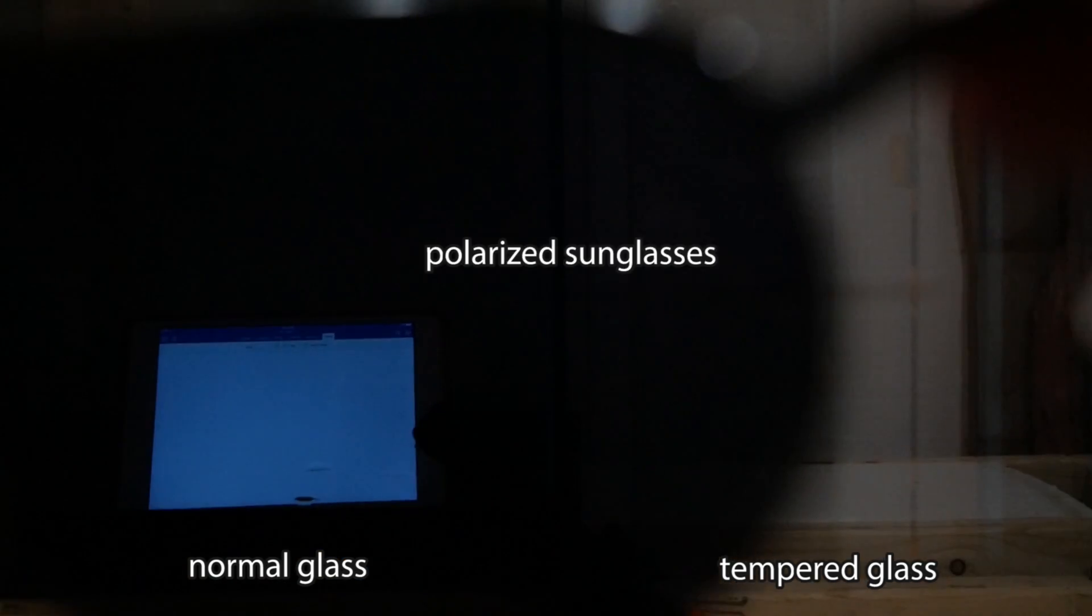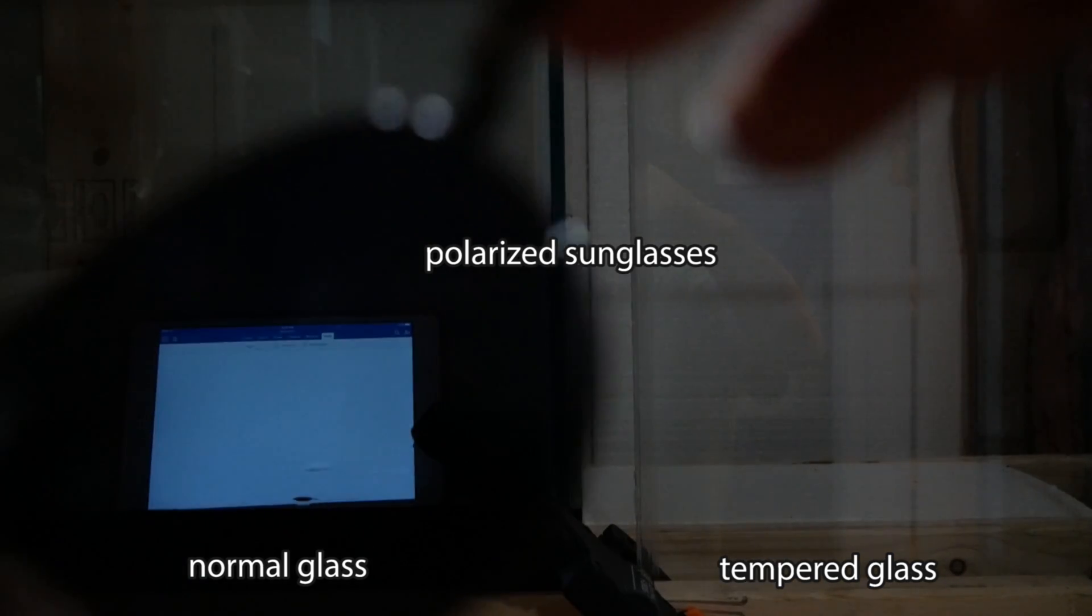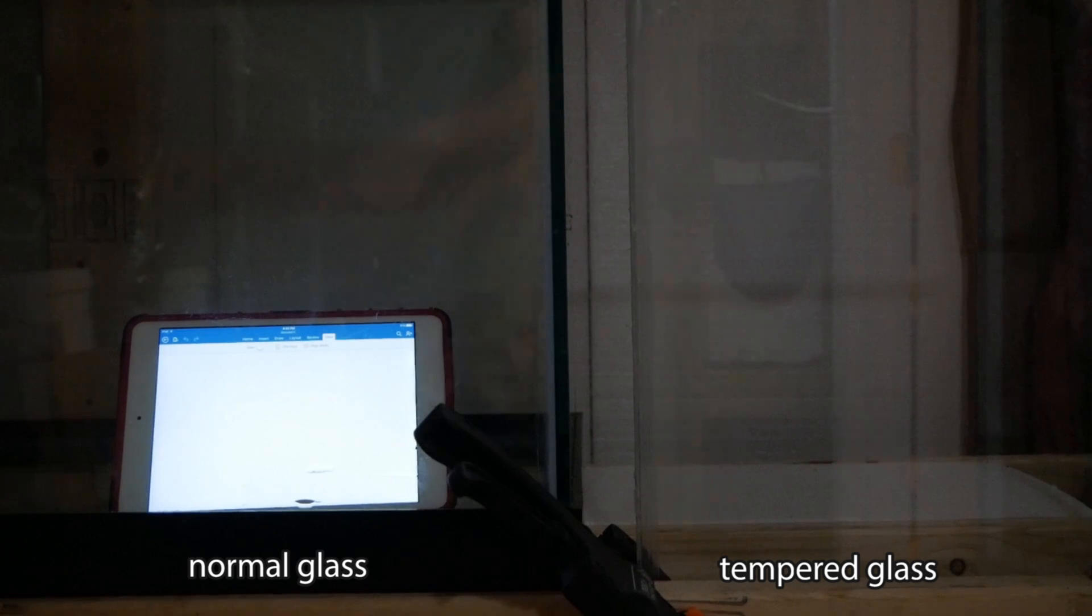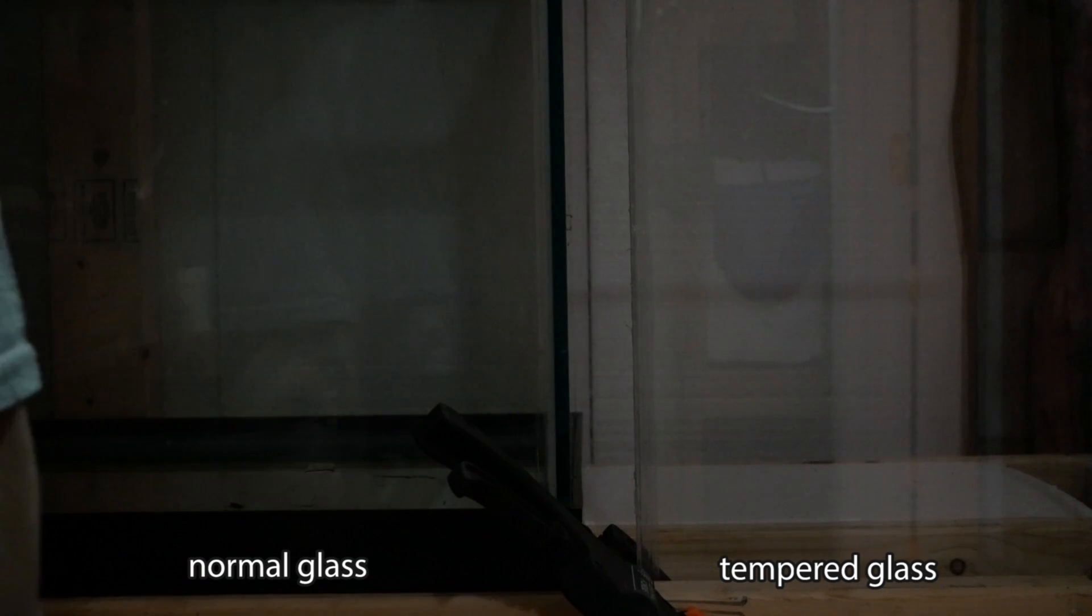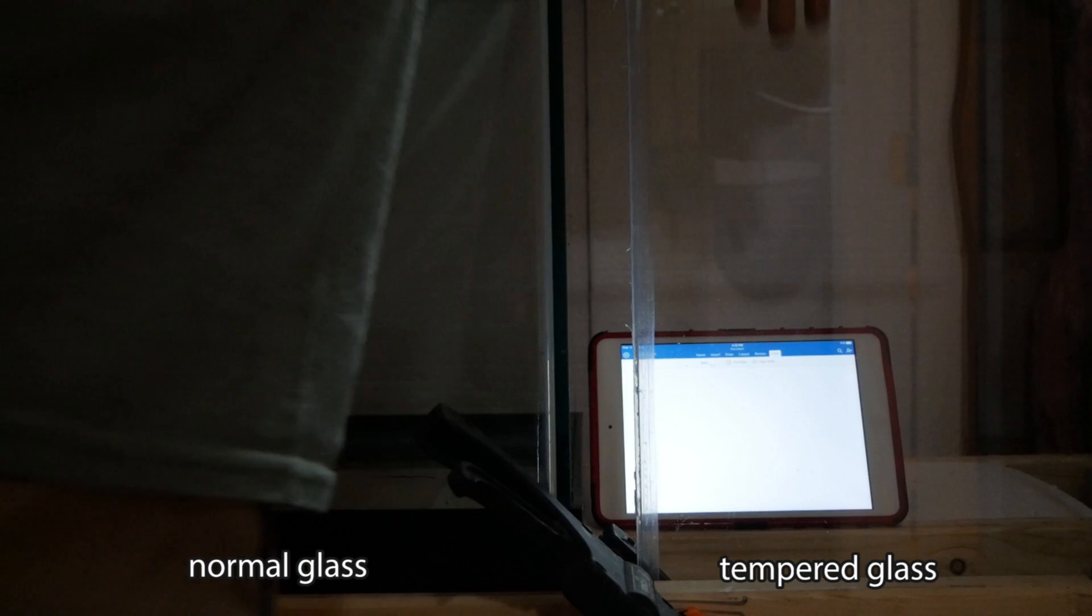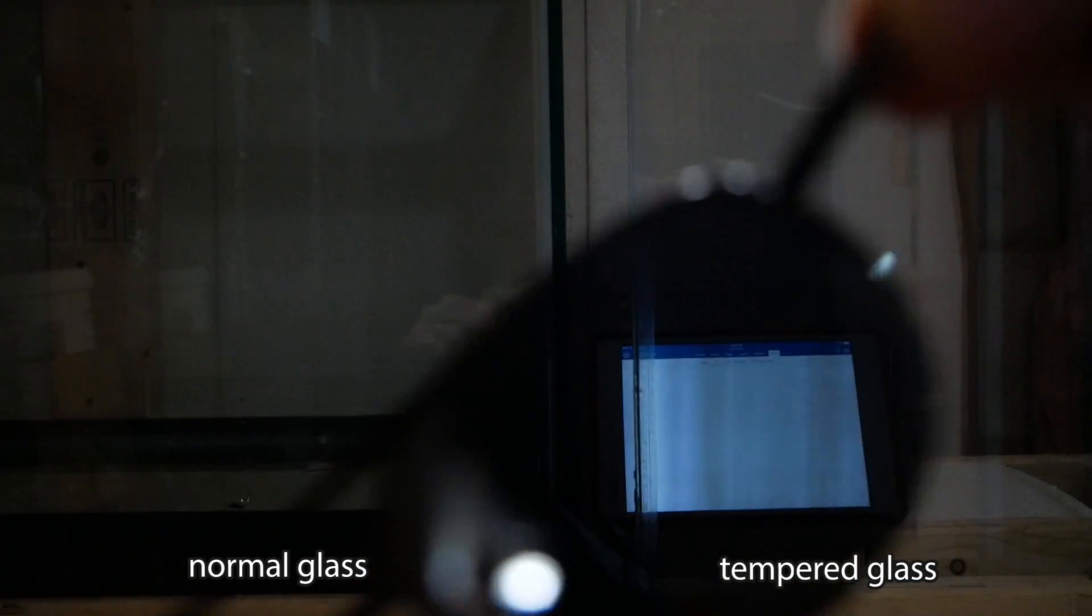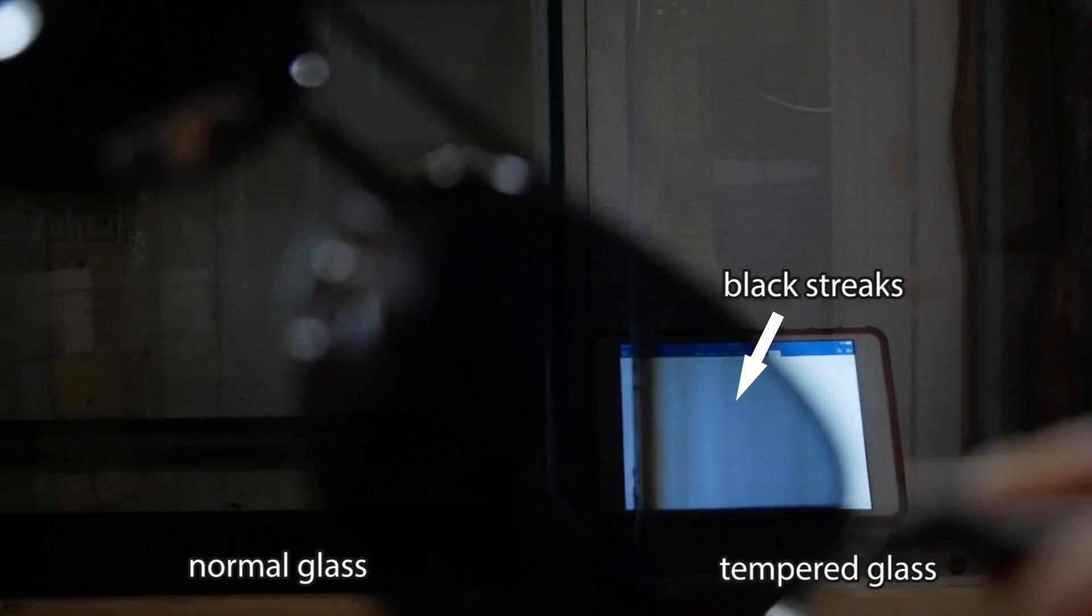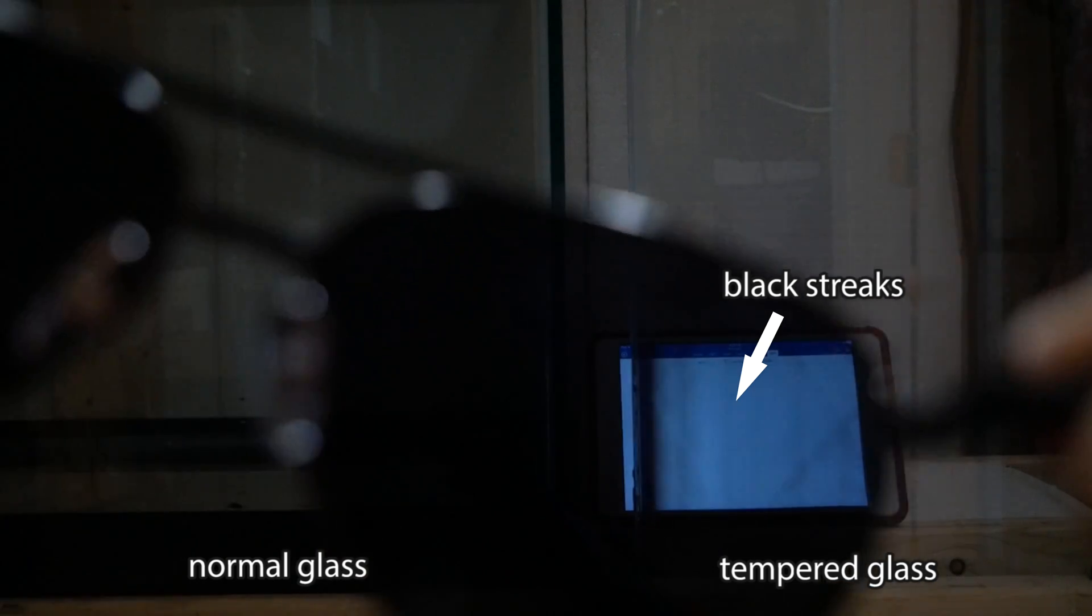If you put the iPad behind the normal glass, there's no effect on light. When I move the iPad behind the tempered glass and look through the polarized sunglasses, you can see black streaks through light. That's the sign that it is tempered glass.